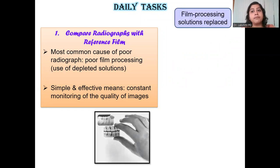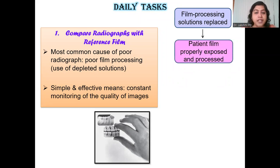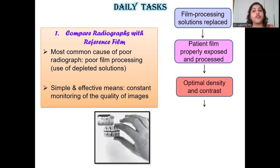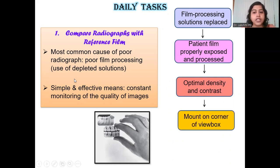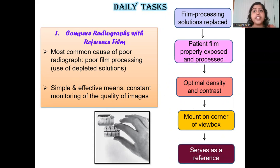For this you will have to take a reference film. Ideally on the day that the film processing solutions are being replaced, take a film of a patient using proper exposure parameters and adequate object-source distance, processed according to manufacturer's instructions. You then get a good radiograph of optimal density and contrast, which you mount on one corner of your view box. This film basically serves as your reference film, and every single radiograph given out from your facility every day must be compared with it to ensure optimum quality, density, and contrast.